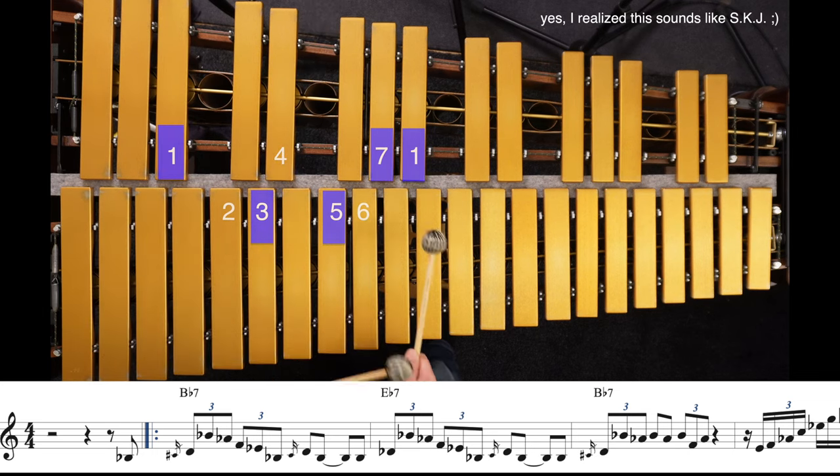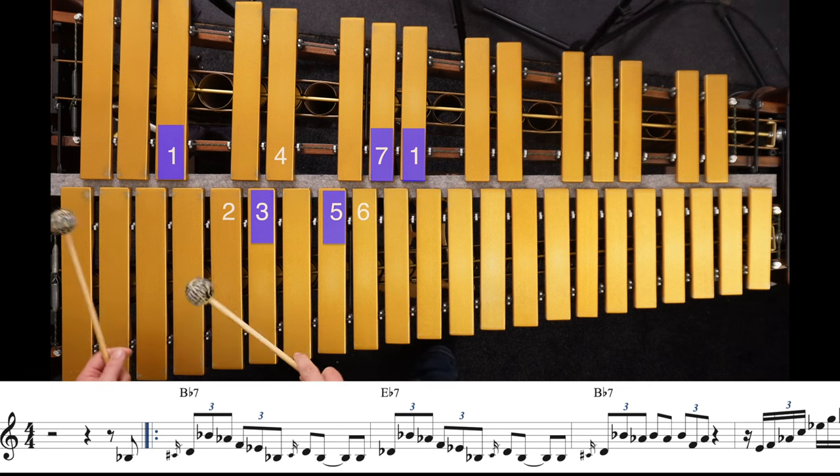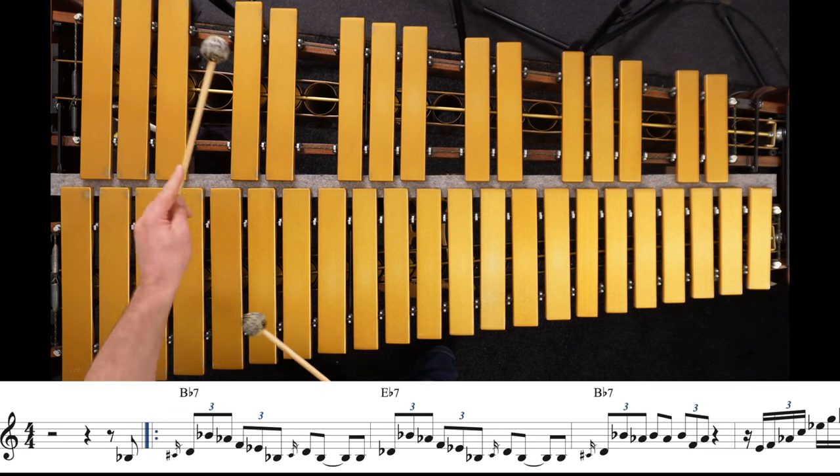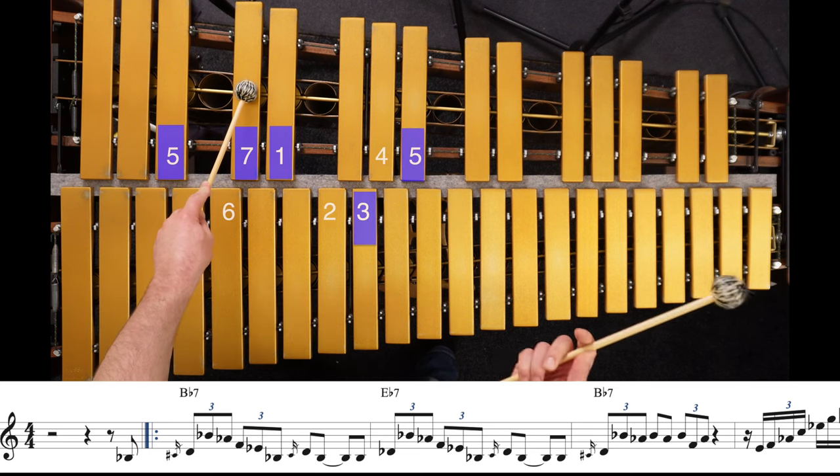Then when the chord changes to Eb7, I simply change the D, which was the third on the Bb7, to a Db, which is now the seventh on the Eb7.